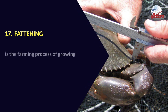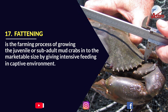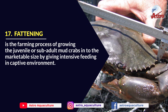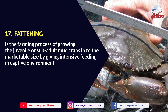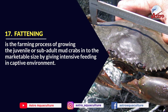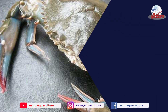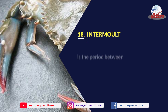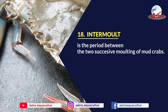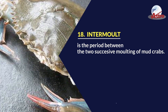Fattening: Is the farming process of growing the juvenile or sub-adult mud crabs into the marketable size by giving intensive feeding in a captive environment. Intermolt: Is the period between the two successive molting events of mud crabs.